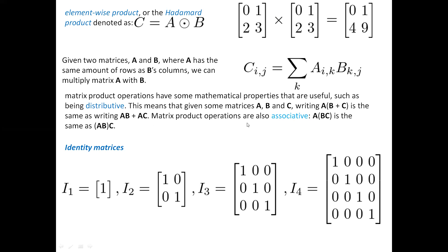Similarly, matrix product operations are associative, meaning A times (B times C) is the same as (A times B) times C. Remember, the order of the matrices must be maintained — A, B, C. You cannot change the order.